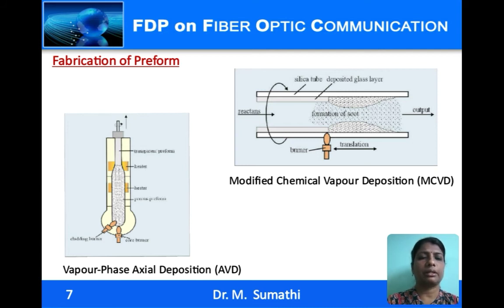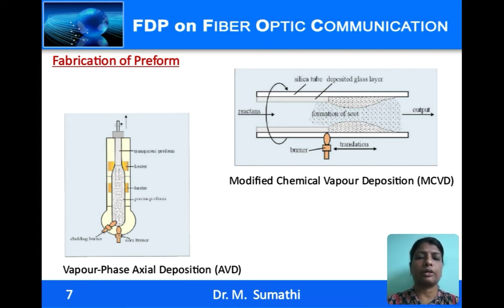In the vapor phase axial deposition (VAD) method, a seed silica rod is used. The oxide material is deposited at the tip of the silica rod, and as it is deposited the rod is pulled upward, forming a porous glass preform. The rod also rotates horizontally so that uniform cylindrical deposition occurs. As the rod is pulled upward it is heated in a zone so that the preform becomes a solid transparent glass preform, which is later used for drawing of the fiber.